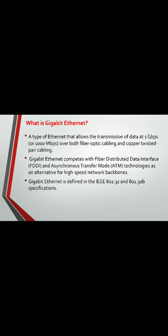Here is the definition of Gigabit Ethernet: it is a type of Ethernet that allows the transmission of data at 1 Gbps, or 1000 Mbps, over both fiber optic cabling and copper twisted pair cabling. Gigabit Ethernet competes with Fiber Distributed Data Interface (FDDI) and Asynchronous Transfer Mode (ATM) technologies as alternatives for high-speed network backbones. Gigabit Ethernet is defined in the IEEE 802.3z and 802.3ab specifications.